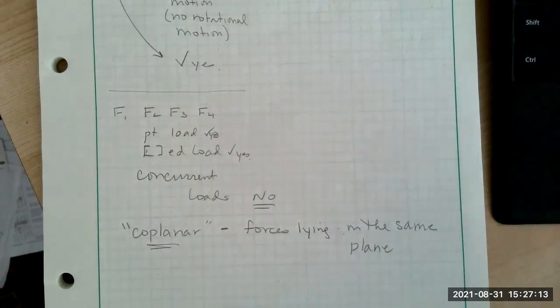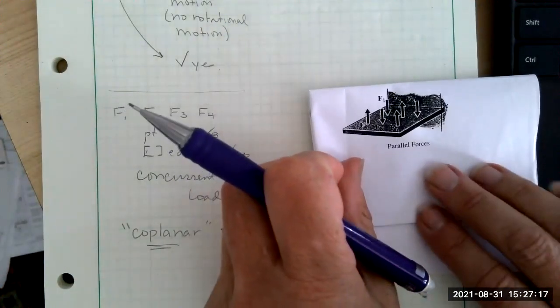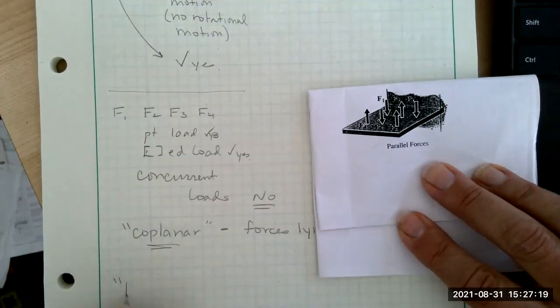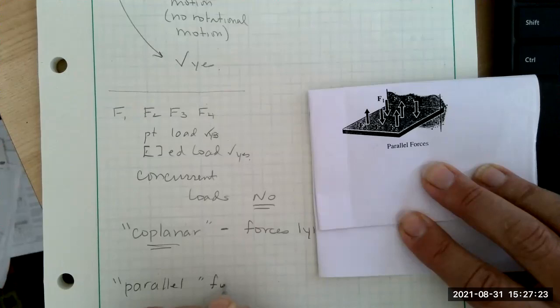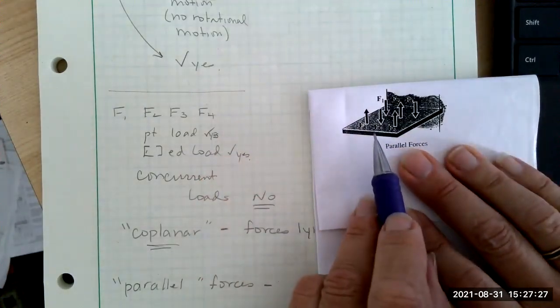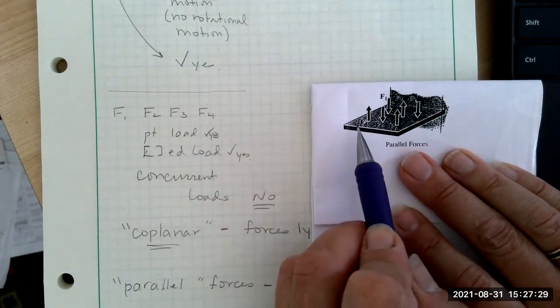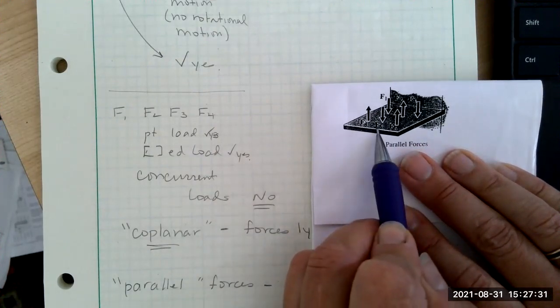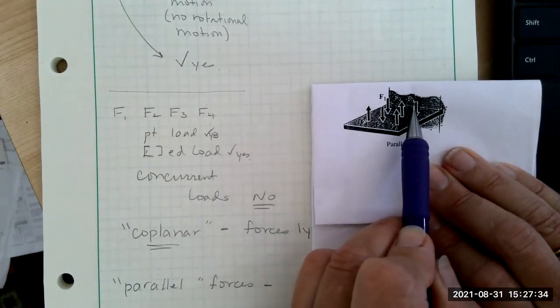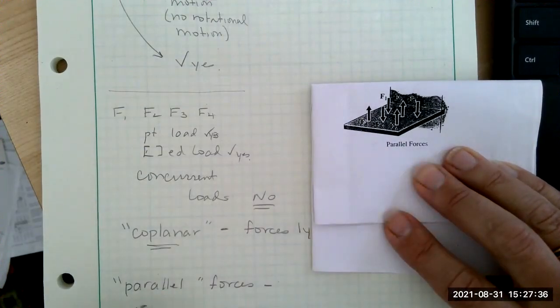How about another definition? Let's take a look at this. This one is introducing what's referred to as parallel forces. And it's hard for you to see in the copy, but if you look close, this says F4, F5, F6, F2, and F3. So all these, F1 through F6, they are all point loads.